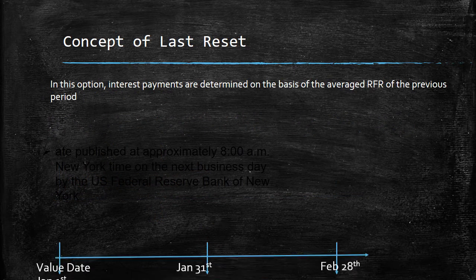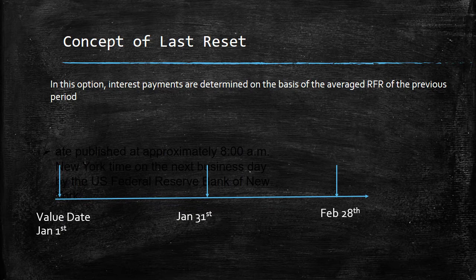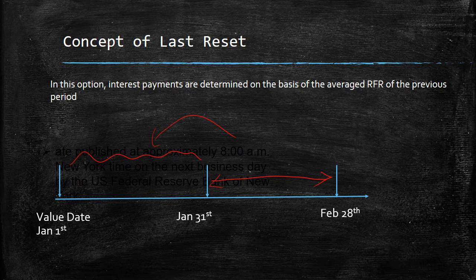What is the concept of last reset? In this option, the interest payments are determined on the basis of the average RFR of the previous period. That means if I have to calculate the interest for the February period, I will use the average RFR of the previous period, which is January. Of course, it's very dicey here because if an important geopolitical situation changes the rate to an extreme — either extremely low or extremely high — the borrower and lender cannot take recourse of that because they are tied into the rate of the previous period.